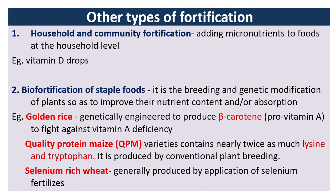Other types include household and community fortification, which involves adding micronutrients to foods at the household level — for example, vitamin D drops. Biofortification of staple foods involves breeding and genetic modification of plants to improve their nutrient content and absorption. An example is golden rice, genetically engineered to produce beta-carotene (pro-vitamin A) to fight vitamin A deficiency, which causes nyctalopia or night blindness.